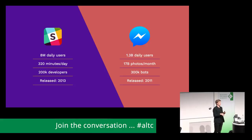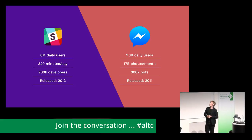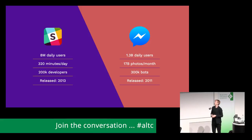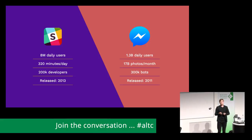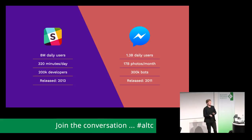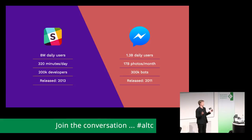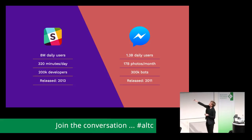Slack is a team communication platform for companies, and Facebook Messenger is a social chat-based application. Slack has about 8 million users — it was released in 2013 and is probably one of the fastest-growing enterprise companies in history. Facebook Messenger has 1.3 billion daily users. What's really interesting is the engagement: those 8 million daily users on Slack spend an average of 320 minutes per day, which is absolutely insane for enterprise software. 200,000 developers are building applications for Slack.